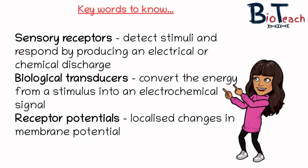When we're looking at receptors, or sensory receptors as we might refer to them, we're talking about specialised receptors which detect stimuli and respond, but they produce an electrical or chemical discharge. They're known as biological transducers, which basically means they're able to convert the energy from a stimulus into an electrochemical signal. They can do that because the stimulus opens or closes ion channels, and that leads to localised changes in what we call a membrane potential — and that process is known as receptor potentials.